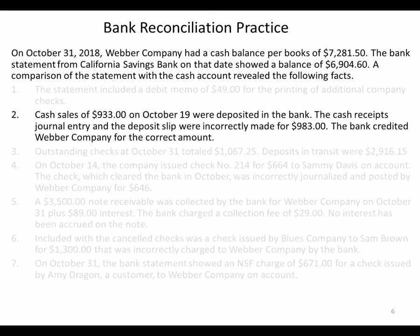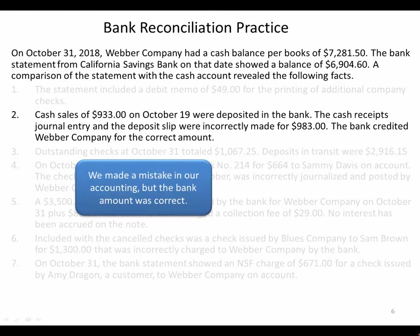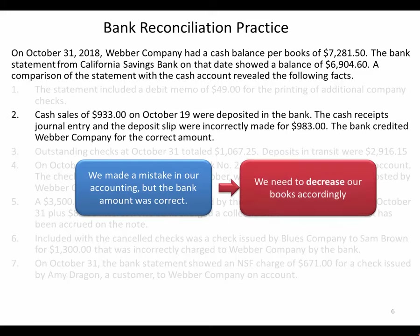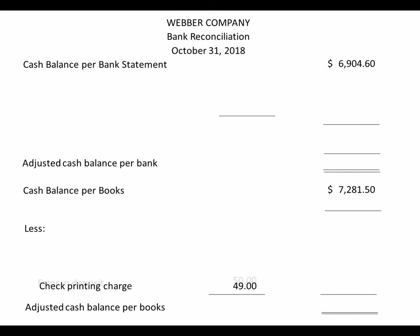Now let's look at number two. Cash sales of $933 on October 19th were deposited in the bank. The cash receipts journal entry and the deposit slip were incorrectly made for $983. The bank credited Weber for the correct amount. So we made a mistake in our accounting — we recorded it as $983 but it was really $933. Because we recorded it for more than what it actually was, we need to decrease our books by that $50 difference.